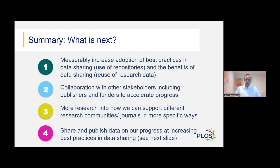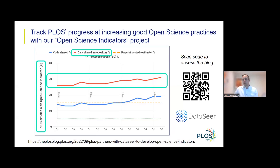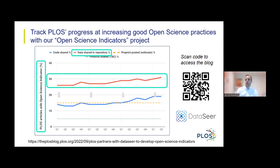We're also measuring and will share our progress on supporting other open science practices. A few weeks ago, PLOS announced a new project called Open Science Indicators — measurements of four key open science practices in articles that PLOS publishes, including importantly how many articles share data in a repository. This project is a collaboration with an organization called DataSeer, and it's using an artificial intelligence-based method to measure open science practices in all of our articles back to 2019 — that's about 70,000 articles.